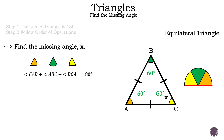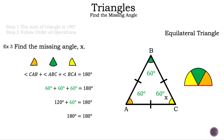Let's go ahead and substitute what we know. Now we have 60 degrees for the orange angle, plus 60 degrees for the green angle, plus 60 degrees for the yellow angle, and that is equal to 180 degrees. Let's simplify the left-hand side by adding the first 60-degree angle and the second 60-degree angle, and the result is 120 degrees. Now we have 120 degrees plus 60 degrees is equal to 180 degrees. Continuing to simplify, 120 plus 60 equals 180 degrees. So 180 degrees equals 180 degrees, and that is always true. So the missing angle X is equal to 60 degrees. That is example three.